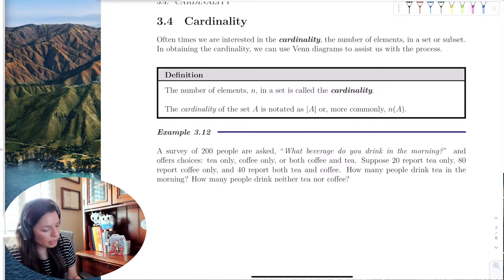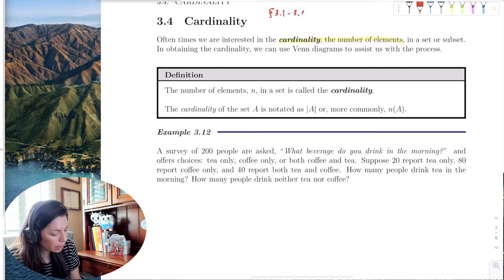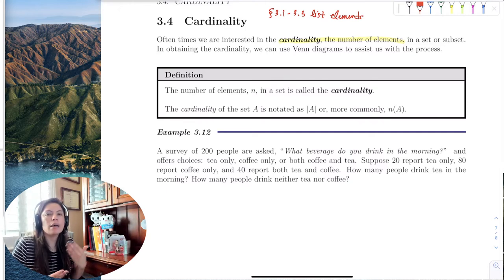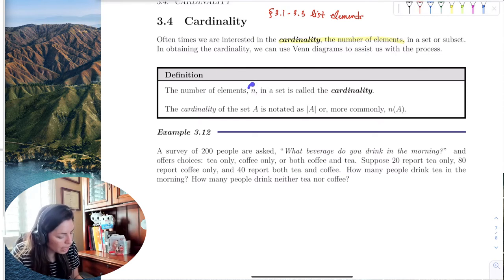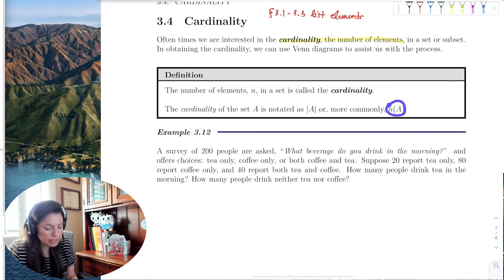So cardinality, it's very careful we see this. Cardinality is the number of elements in a set. Which, let's note here that the previous sections, 3-1 to 3-3, list elements. We're just listing the elements. We don't know how many. But cardinality tells us how many. So if the number of elements we denote here as n is the cardinality, then the cardinality of a set is going to be notated as the n of a, the number of elements in set a.